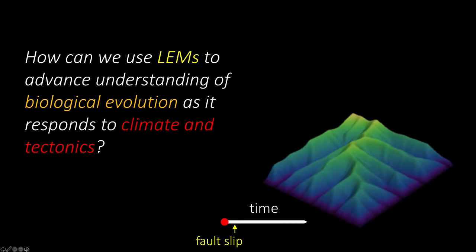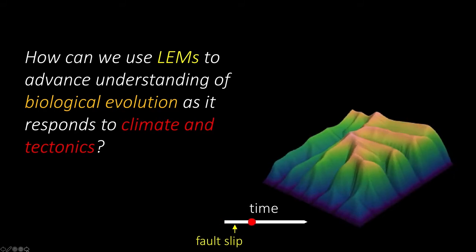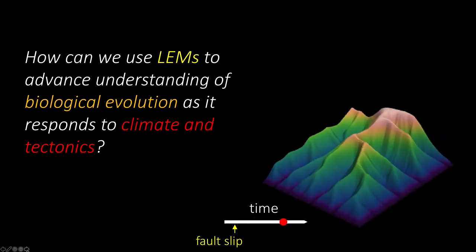So back to the block diagram. In this block diagram, we can see as the landscape responds to the slip of a fault, you can perhaps imagine the landscape populated with simulated species and the response of the landscape to that fault may redistribute the species and affect the evolutionary processes.